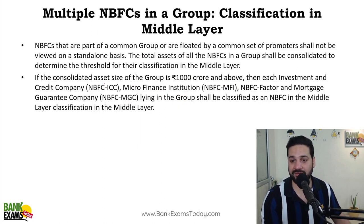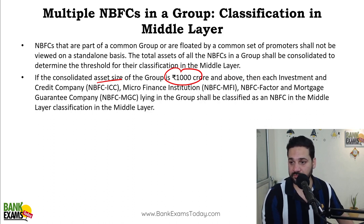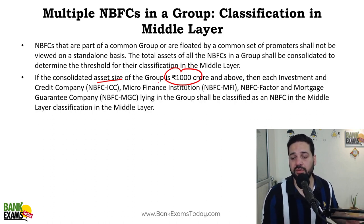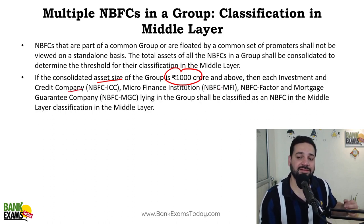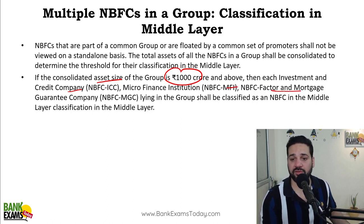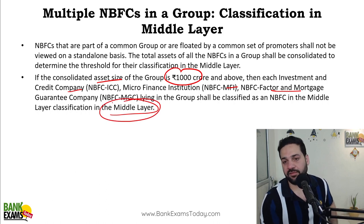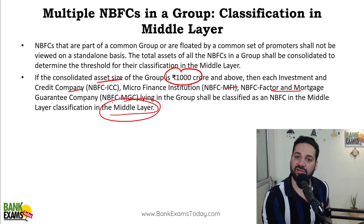If the consolidated asset size of the group is 1,000 crores and above, then each NBFC — whether it is an investment and credit company, a microfinance institution, a factor, or a mortgage guarantee company — all of them would be considered as middle-layer NBFCs. Their classification itself would change.